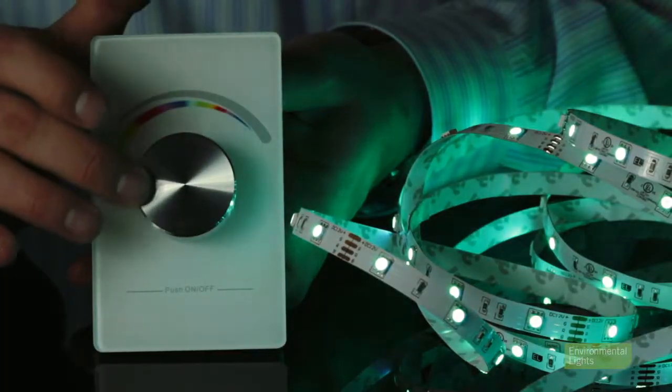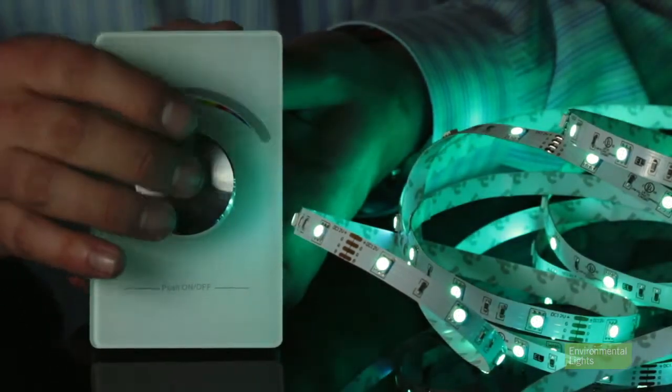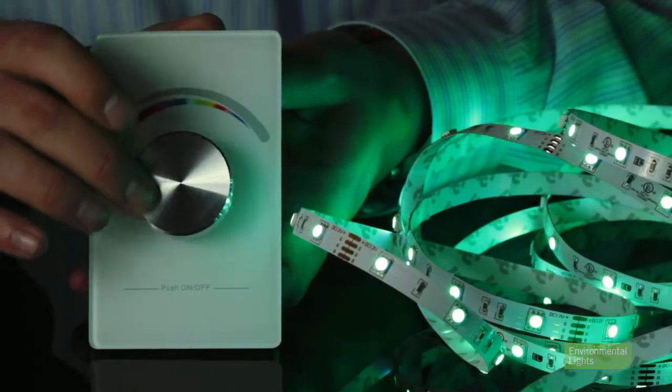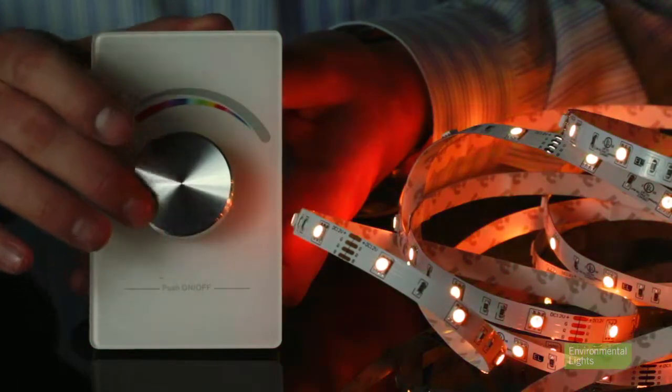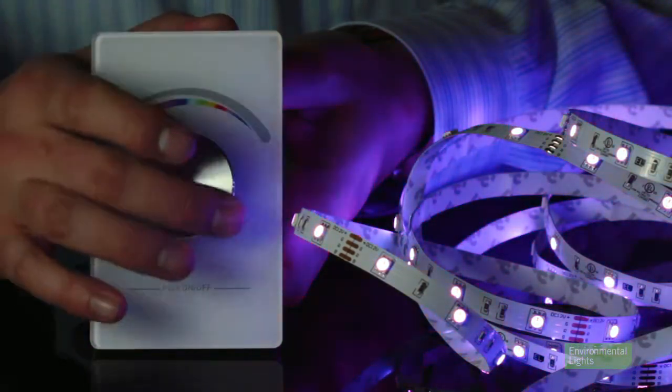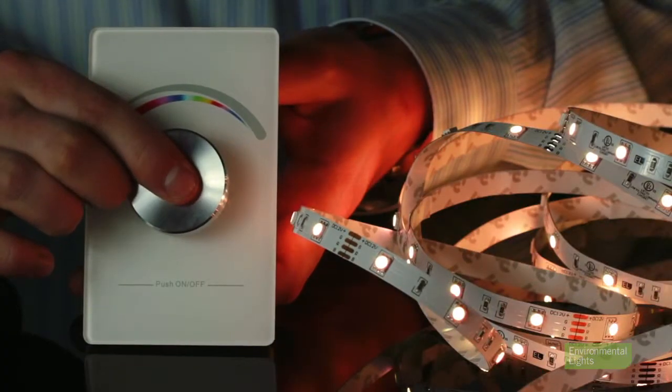The wall mount RGB LED controller Pro controls RGB LEDs. A double press toggles between color and brightness control. It can also mix warm neutral white and daylight white from RGB. Long presses of the knob will cycle through the different whites.